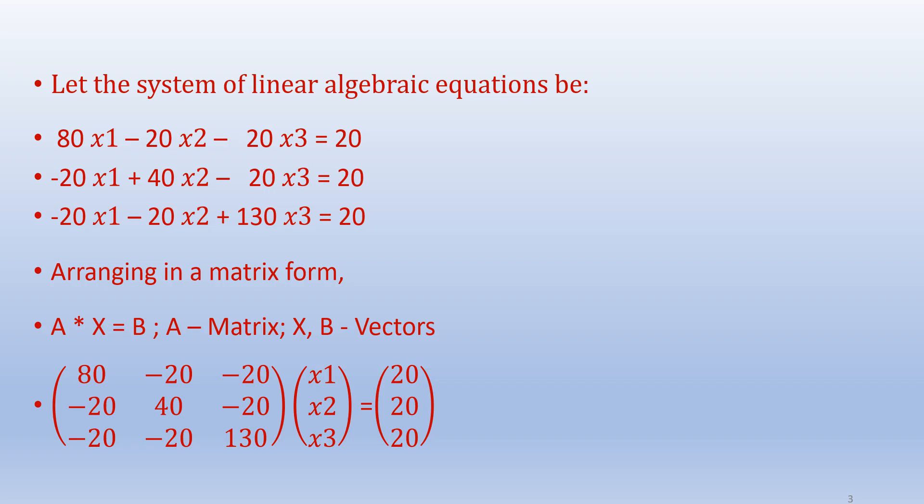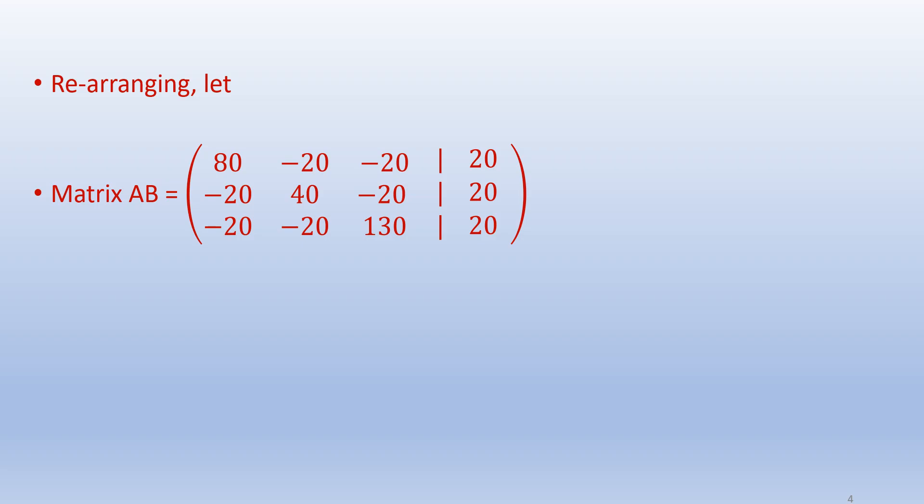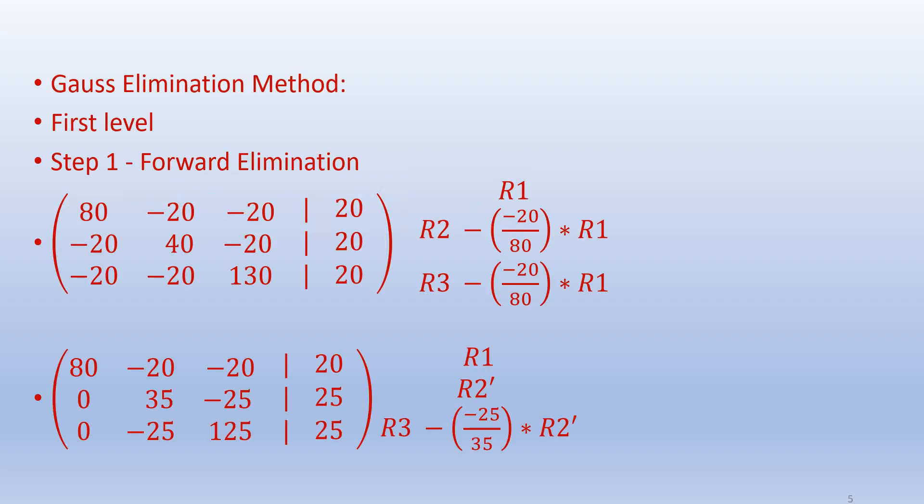Your system of equations with three unknowns x1, x2, x3 is given below. When we arrange this in matrix form, A times x equals b, where A is the matrix and x and b are vectors, we can see the arrangement below. We then combine matrix A and vector b into an augmented matrix [A|b] as shown here.